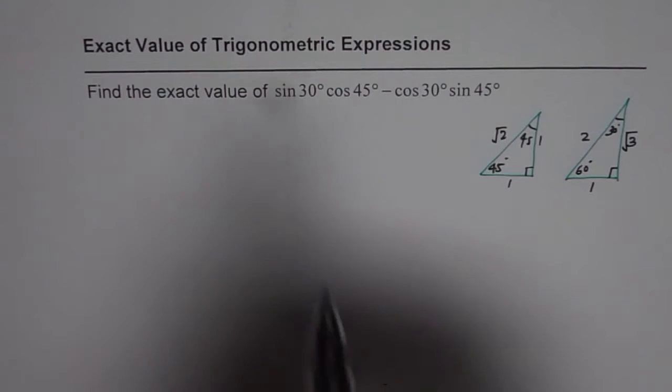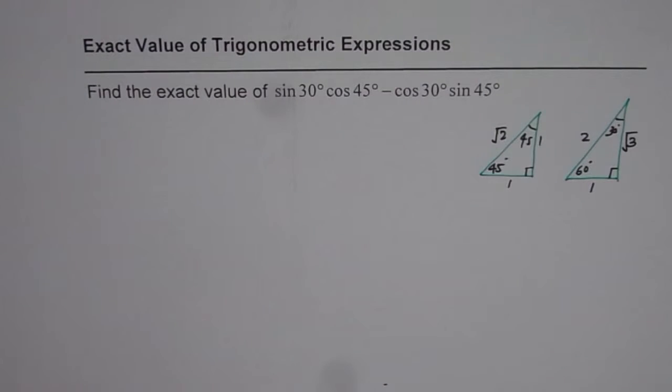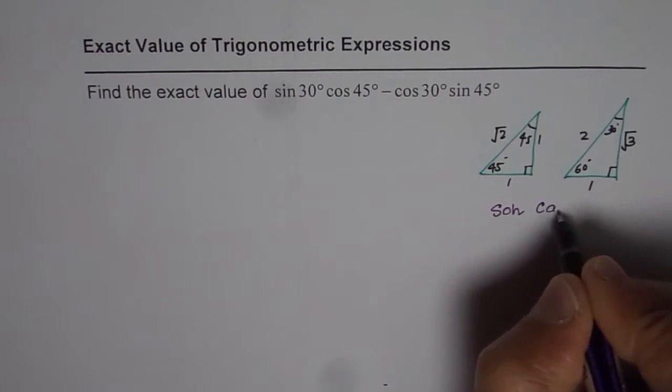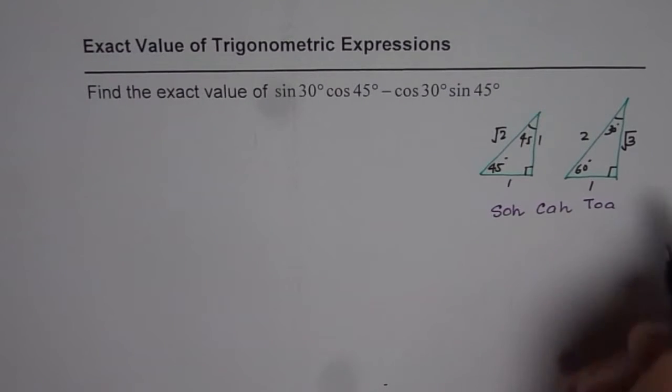The trigonometric expression given to us is sin 30. Now you can also write SOH CAH TOA so that you get all the things at one place. Sin is opposite over hypotenuse, cos is adjacent over hypotenuse, and tan is opposite over adjacent side.